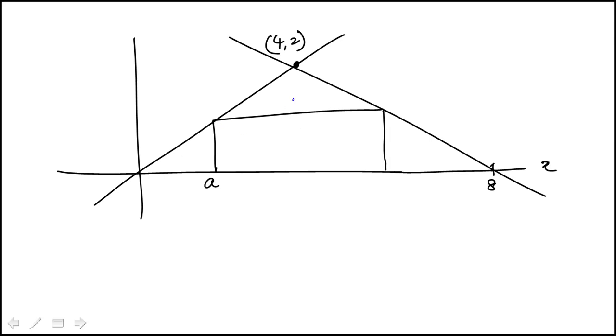So here we're shown this shaded rectangle and we are shown these two lines that go through this point 4, 2. And we're also given this point as A, A is 0. The question is, what's the area of the shaded rectangle in terms of A?